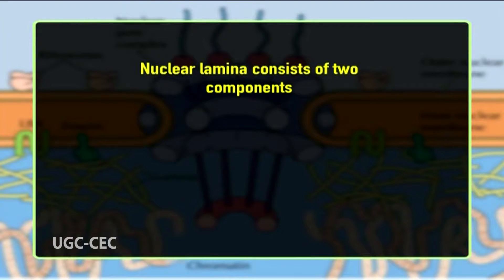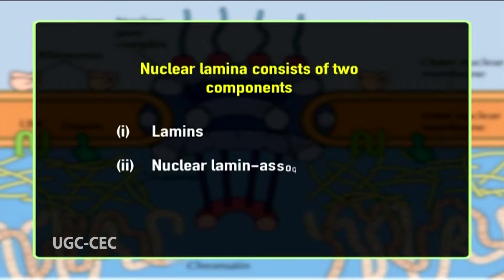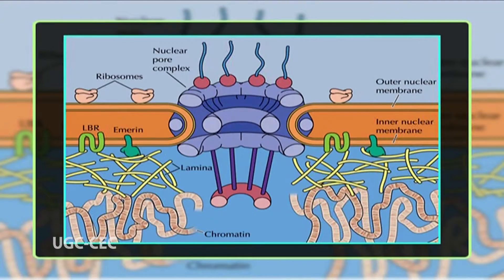The nuclear lamina consists of two components: lamins and nuclear lamina-associated membrane proteins. The lamins are type 5 intermediate filaments categorized as either A-type or B-type according to homology of their DNA sequences, biochemical properties, and cellular localization during the cell cycle. Lamin polypeptides have an almost complete alpha-helical conformation with multiple alpha-helical domains separated by non-alpha-helical linkers that are highly conserved in length and amino acid sequence. Both the C-terminus and N-terminus are non-alpha-helical, with the C-terminus displaying a globular structure.